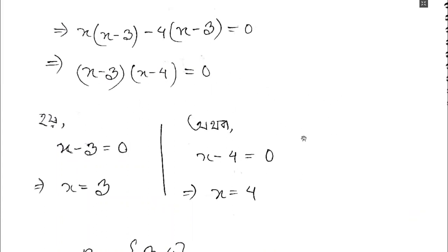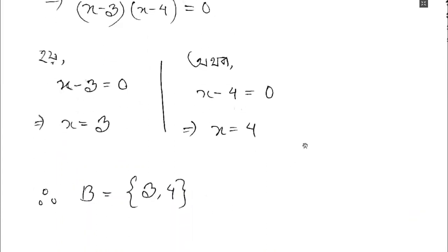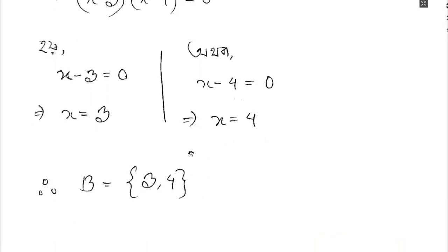x minus 4 equals 0, so x equals 4; and x equals 3. So set B is represented as {3, 4}.